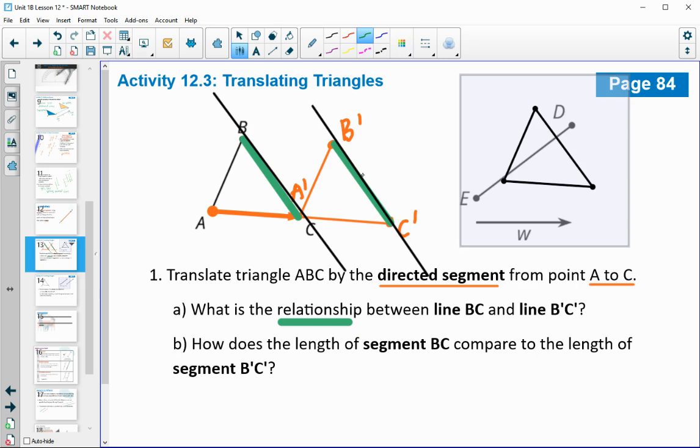So the relationship between those lines seems to be that they're parallel. And then the length of BC and the length of B prime C prime appear to be the same length or congruent since we're doing a translation. And those are rigid motions.